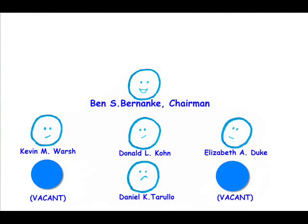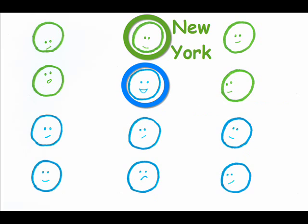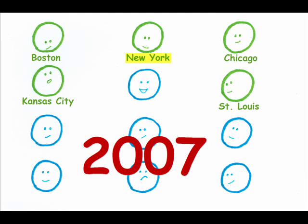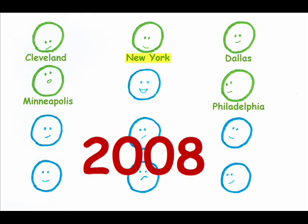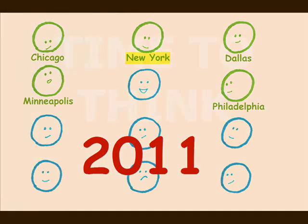The FOMC is made up of the seven-member Board of Governors, plus five of the District Bank Presidents. The President of the Federal Reserve of New York has a permanent position as Vice Chair of the FOMC. The other four seats are served by the other 11 District Presidents on a rotating basis.